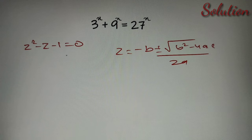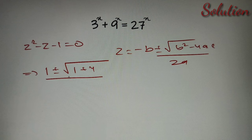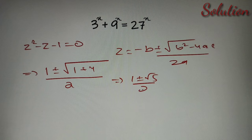Here a, b, and c are the respective coefficients of z squared, z, and 1. We can see that b here is minus 1, but we need minus b, so we get 1 plus or minus the square root of (b squared minus 4ac). That is 1 minus (minus 1) times 4, which equals plus 4. So we get 1 plus or minus the square root of 5, divided by 2. The two values of z are: (1 plus root 5) divided by 2, and (1 minus root 5) divided by 2.